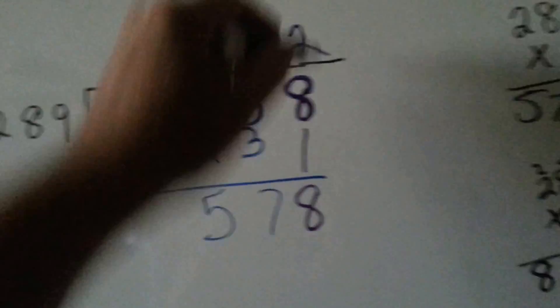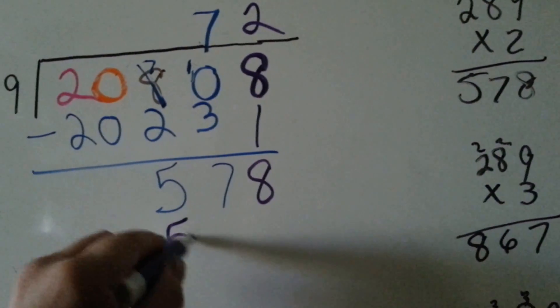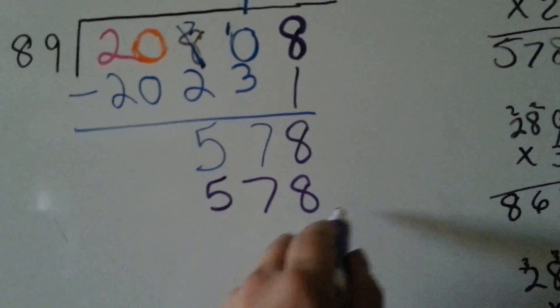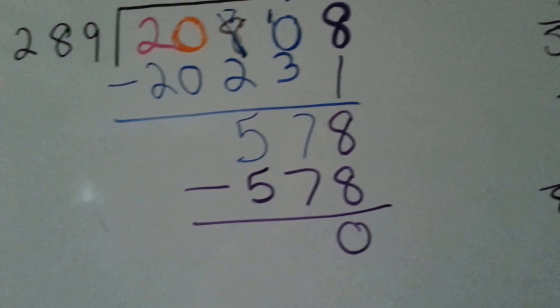We put the 2 above here and 2 times 289 is 578. We do our subtraction and we get 0.